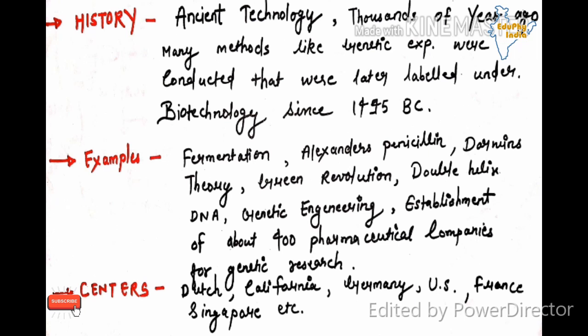That was the technique that is included in biotechnology. Double helix structure of DNA - the double structure of DNA explains the nature of DNA and is the basis of genetic engineering. Genetic engineering develops modern techniques of creating new genes and helps medicinally for operating the genetically based syndromes. Establishment of about 400 pharmaceutical companies for research work. The main centers since history for biotechnology is Dutch California, Germany, US, France, Singapore, etc.